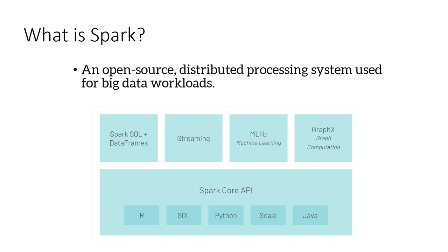Specifically talking about MapReduce — that was the first thing that came along with Hadoop. We used MapReduce to do processing. But MapReduce had its own limitations: it was not meant for iterative processing, and it was not as fast as Spark. Later, Spark was introduced as a distributed processing system. Spark takes data into memory and operates on it, enabling iterative processing and interactive querying much faster than MapReduce.